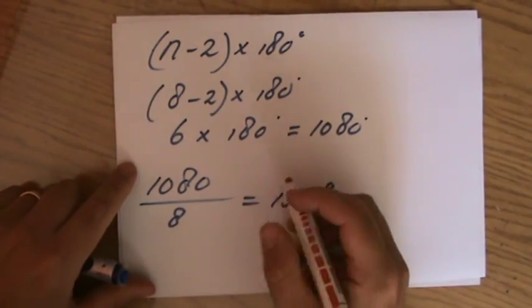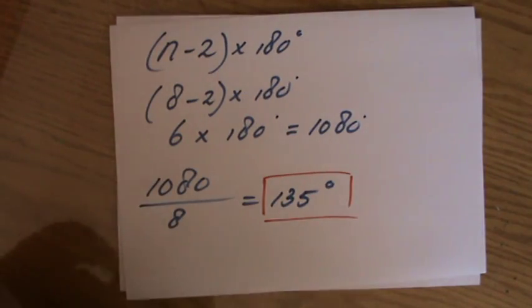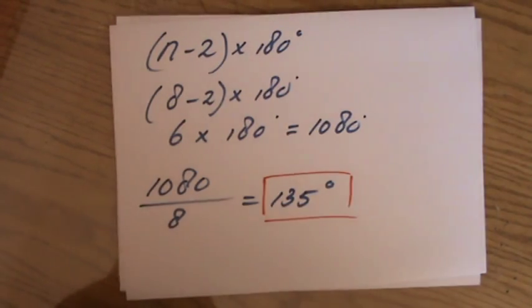So one angle in a regular octagon will equal 135 degrees.